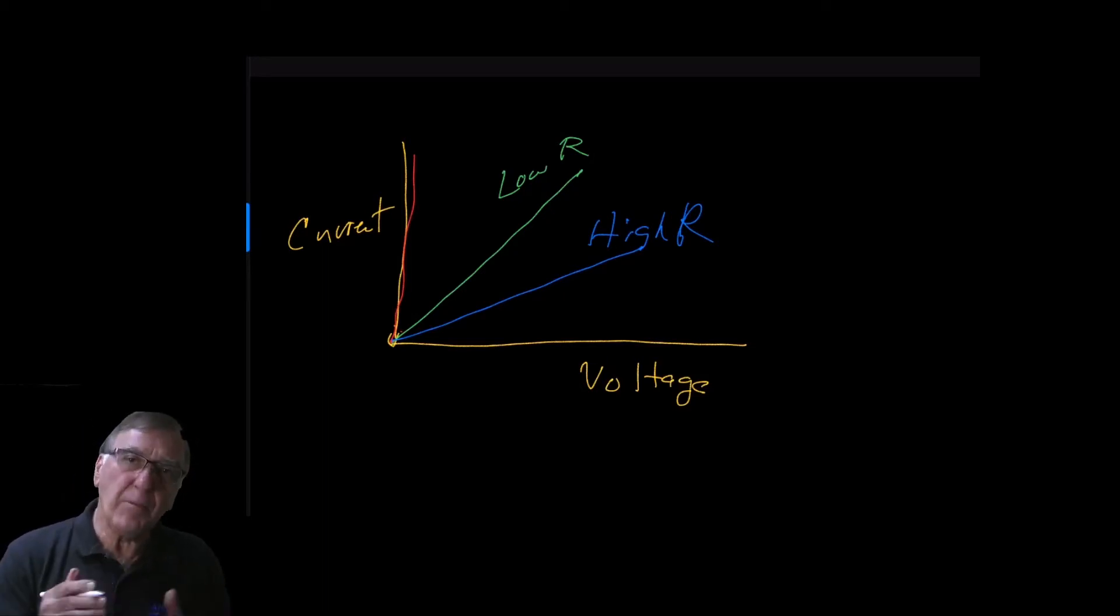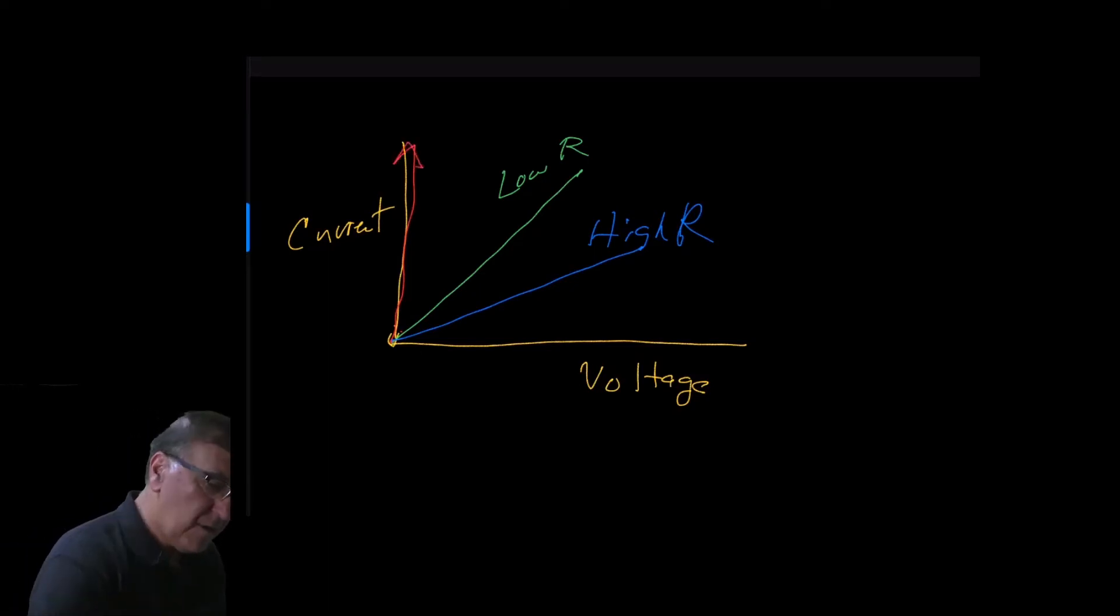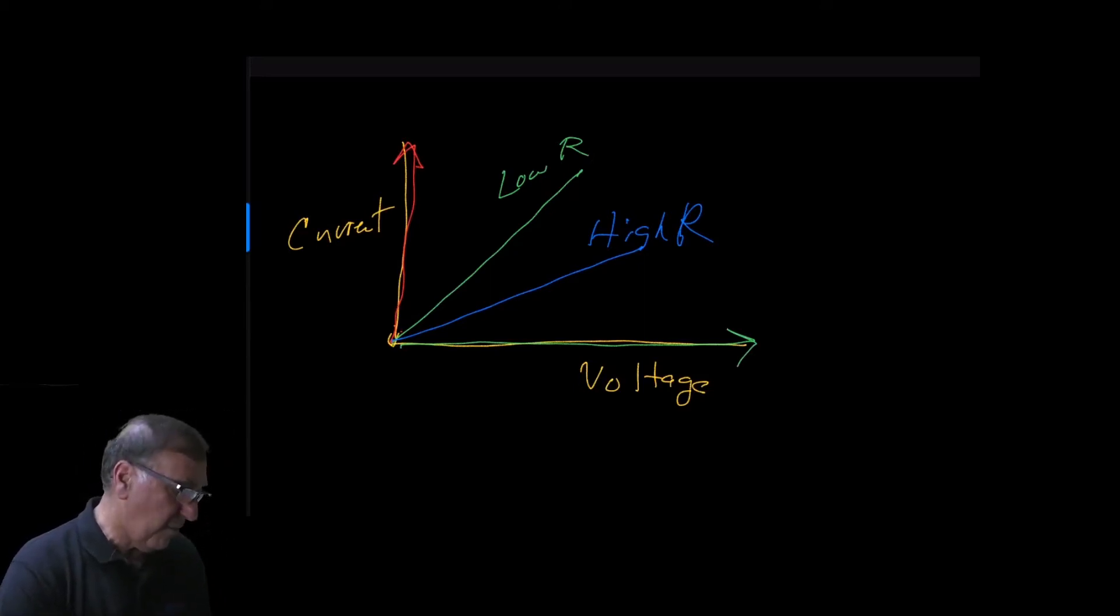In contrast to that, an open circuit would look like this. Let me use another color here. We'll use green this time. That would be down on this line. And the open circuit, the voltage can be very high, but no current.